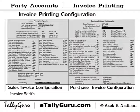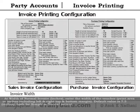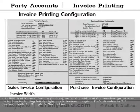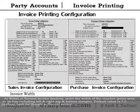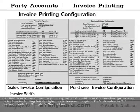Invoice width: at the 'Width of Normal Invoice (inches)' field, enter the width of the voucher print area in inches, including left, right, top, and bottom margins. The default value is 7.5 inches, both for simple and normal format.